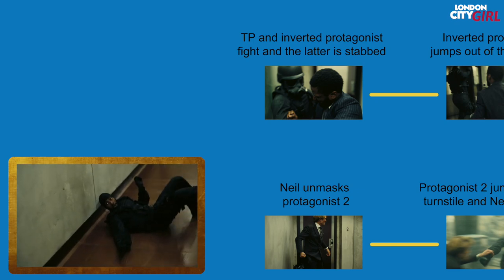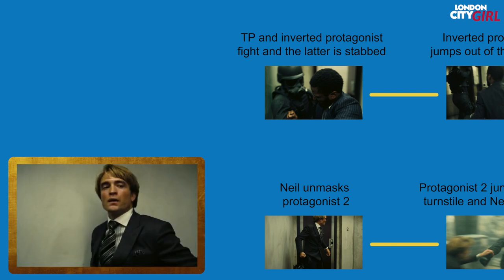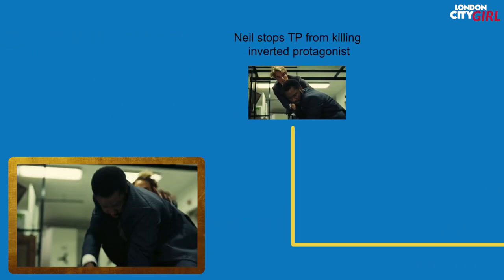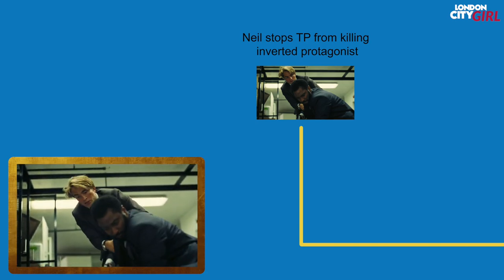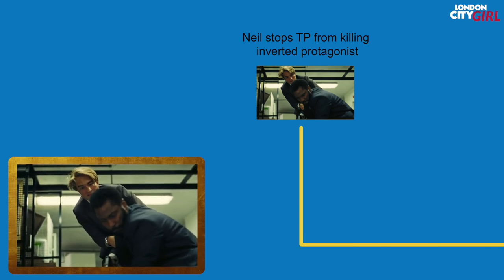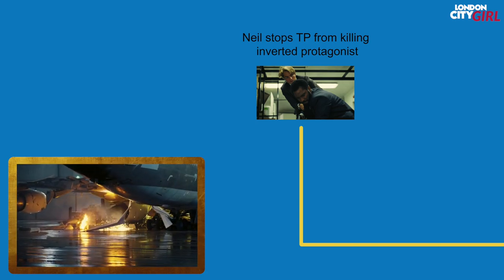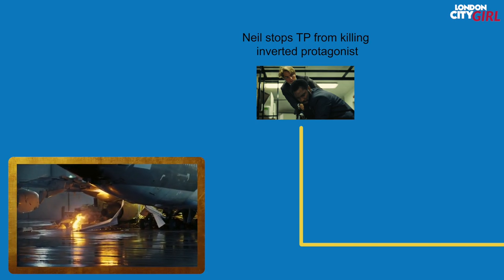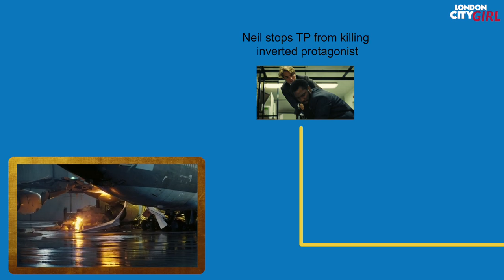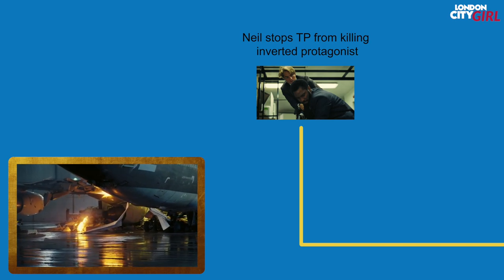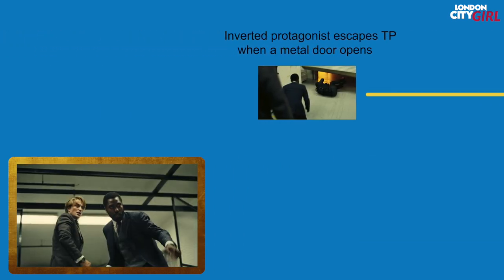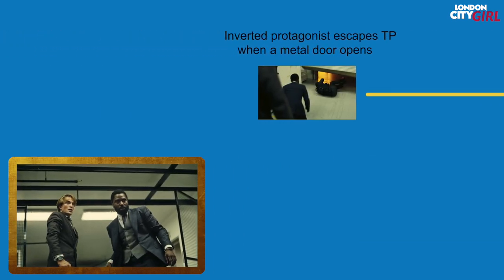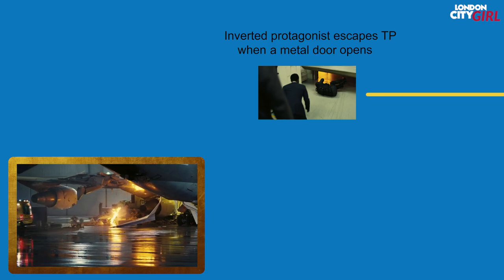Realising who the protagonist is fighting, Neil runs over to stop the protagonist from shooting the inverted protagonist. Outside the Freeport, one of the plane's jet engines is about to explode, and it causes a door to open through which the inverted protagonist makes his escape.